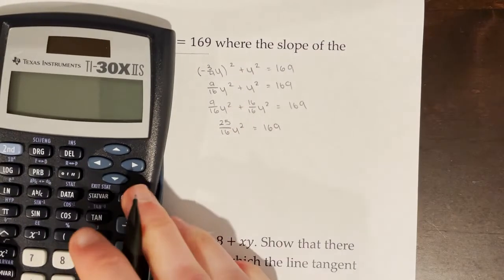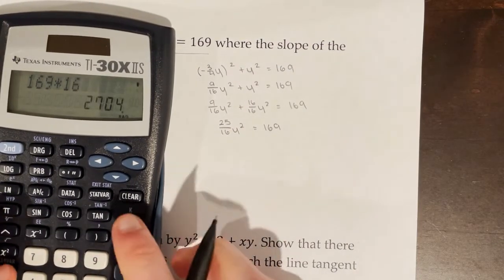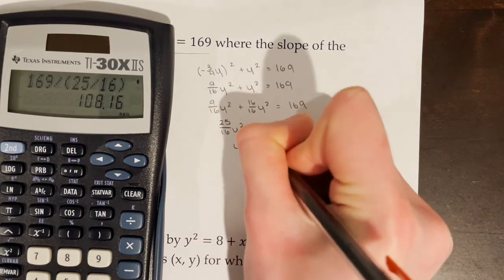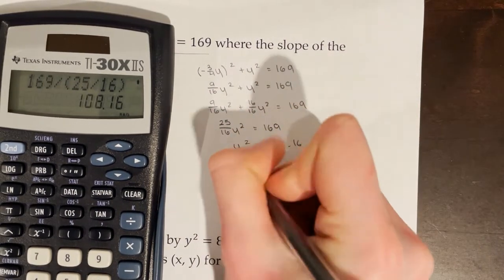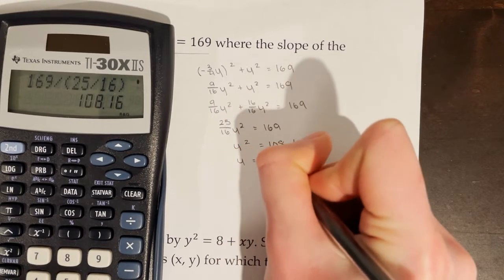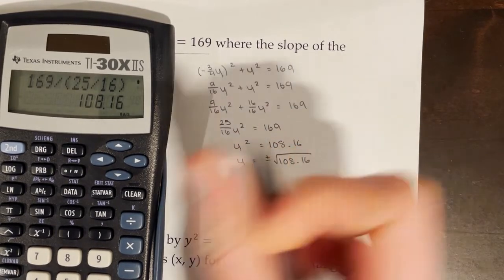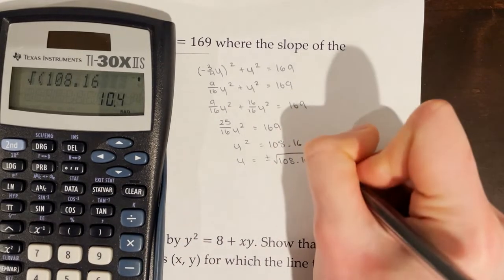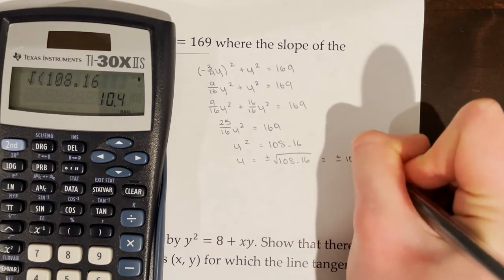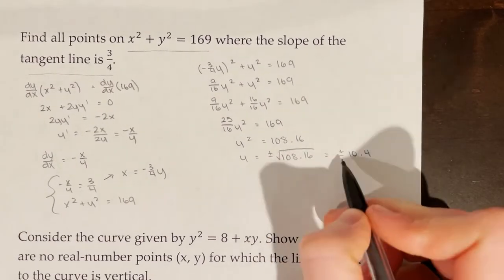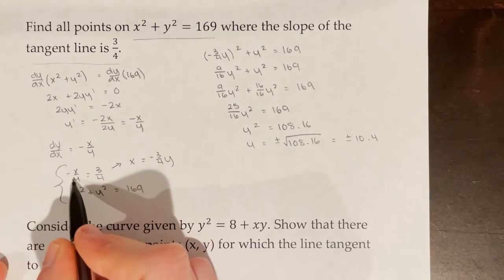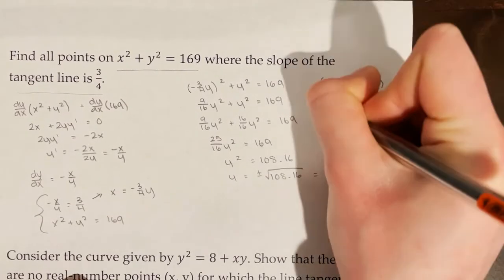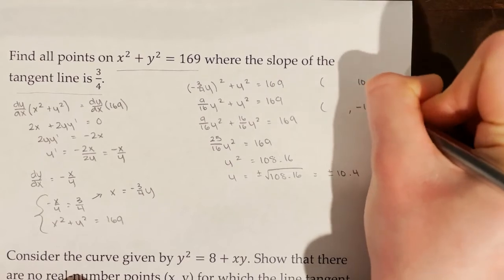Combining terms and using the calculator: 169 × 16 ÷ 25 = 108.16. So y² = 108.16 and y = ±√108.16, which works out to a nice number: y = ±10.4. I'll now find the corresponding x-coordinates.